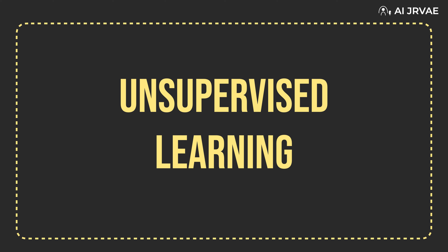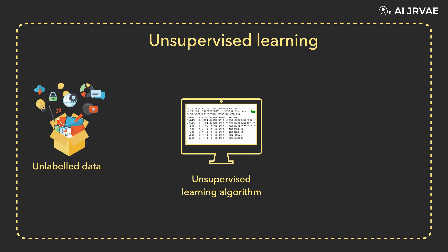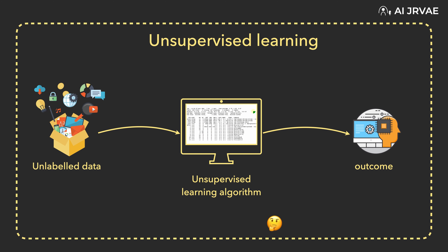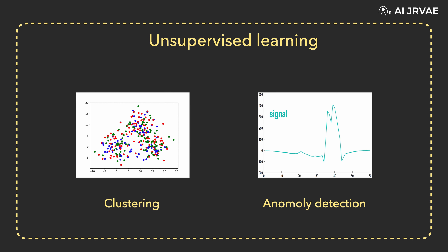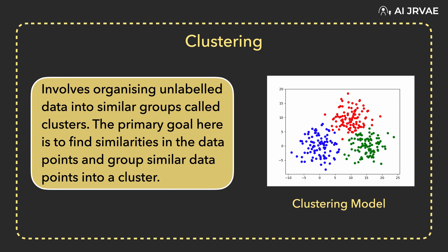Unsupervised learning is a method that trains machines to use data that is neither classified nor labeled. Compared to supervised learning, the machine must be able to classify the data without any prior information about the data. Clustering is one of the most common unsupervised learning methods. It involves organizing unlabeled data into similar groups called clusters.